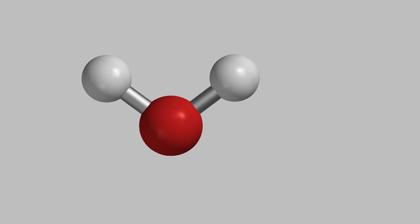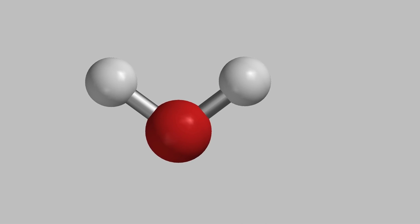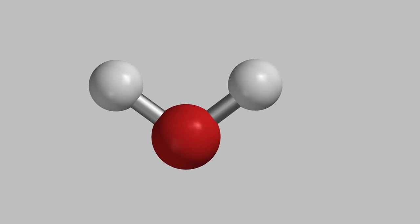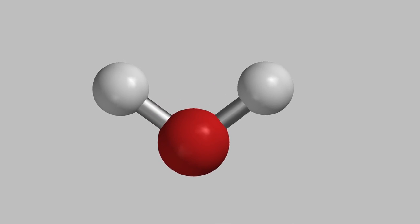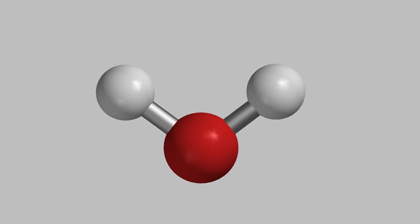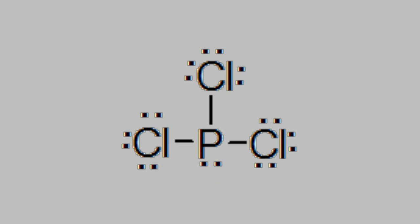The secret is something that you learned about back when we first talked about Lewis dot structures. In many molecules, the central atom has an unshared electron pair on it. Those electron pairs take up space, and they repel the electrons that are in the bonds, pushing them away.